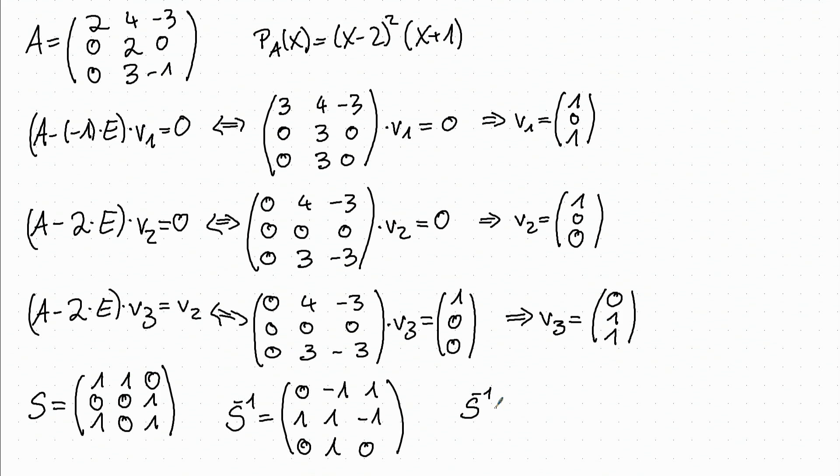And then we have that S to the minus 1 times A times S is in Jordan form. And since we took the eigenvector for the eigenvalue minus 1 as the first vector, this is also the first eigenvalue that appears here.